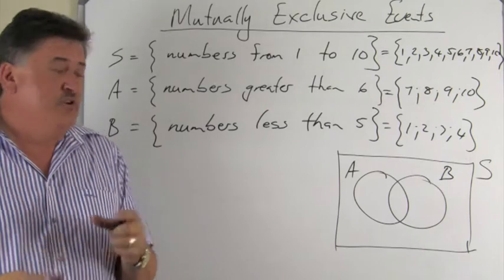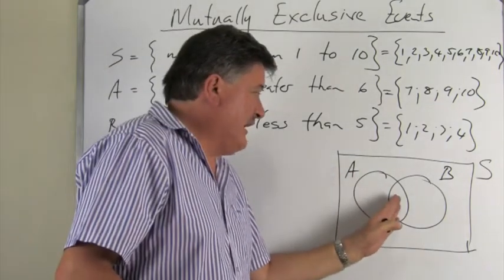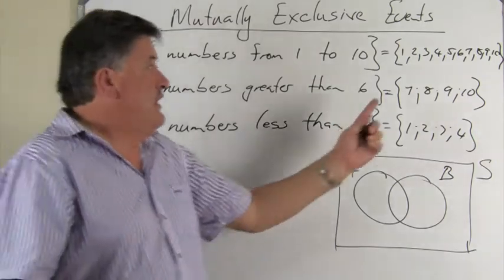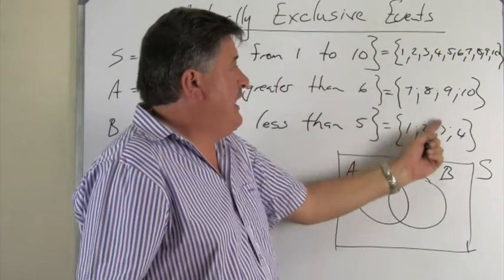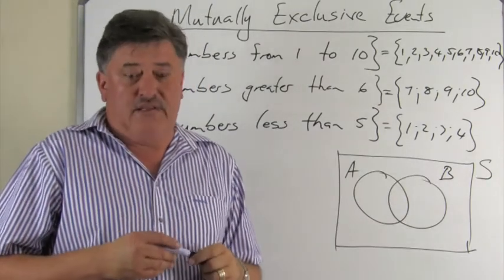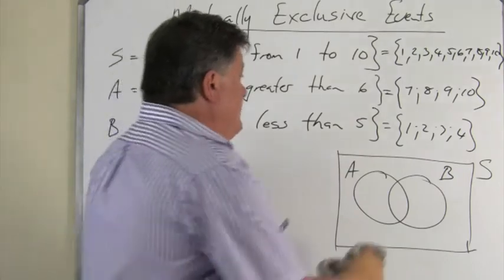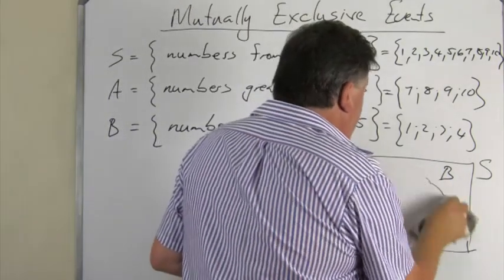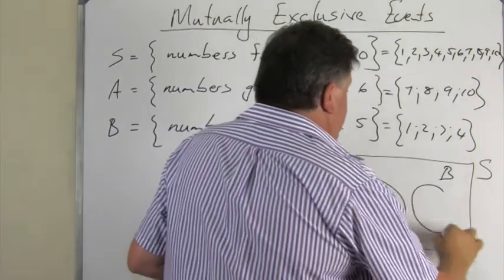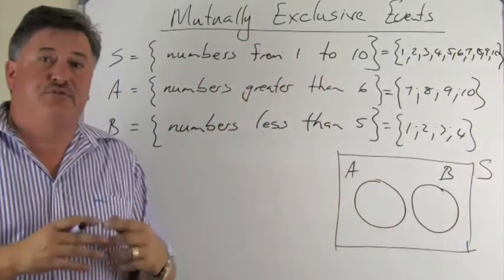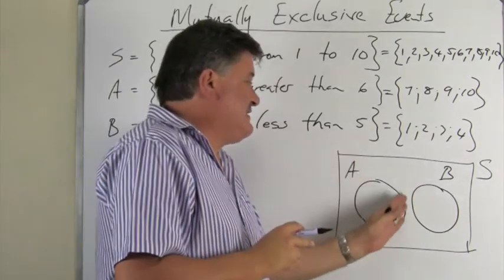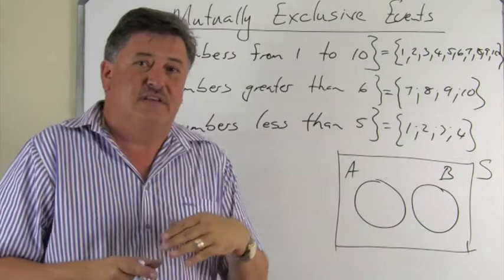Like we said before, we always need to look at what is in both. And as you can see, there are no outcomes in both. So that means we need to change our drawing slightly and draw them as two separate events, because there are no outcomes in the intersection.